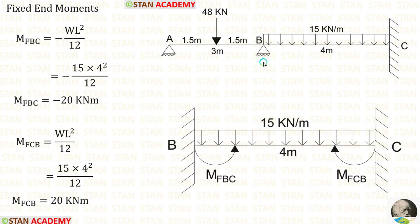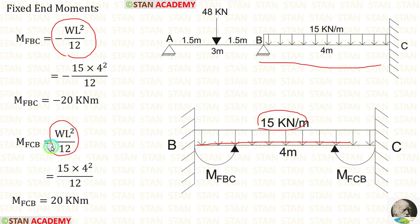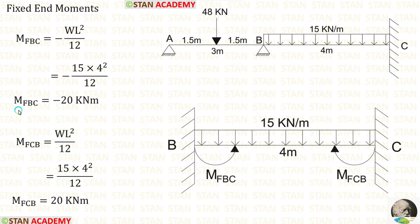Now let us calculate the fixed end moments in span BC. In span BC, there is a UDL of 15 kN per meter acting for the full span. The formulas are −WL²/12 and +WL²/12. After applying the values inside the formulas, we get M_BC and M_CB.